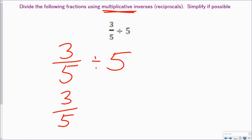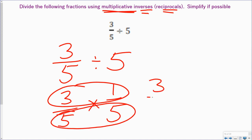Multiplicative means that I change my division to multiplication. And inverse or reciprocals means that I flip the second number, which would be 1 fifth. 3 times 1 is 3. 5 times 5 is 25. I do not have a number that will go in evenly to both 3 and 25. So my answer is 3 twenty-fifths.